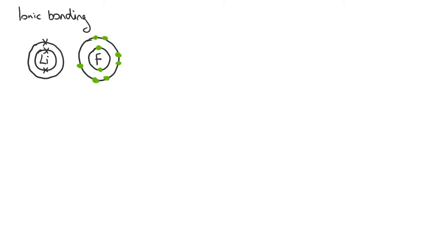In this video, we are going to look at ionic bonding. There are two types of chemical bonding that we are going to concern ourselves with. One is ionic bonding and the other is covalent bonding.